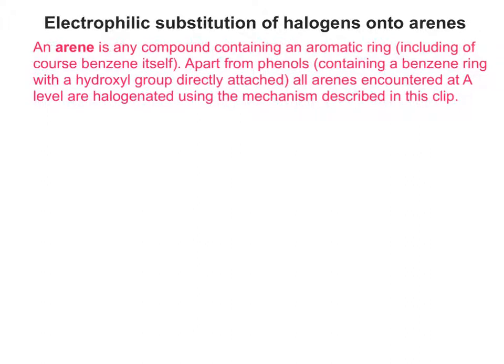Hello and welcome to this clip exploring and introducing the electrophilic substitution mechanism as applied to halogenation of arenes. Just to recap on aromatic introductions, an arene is any compound containing an aromatic ring, or benzene ring as it's sometimes referred to. This also includes benzene itself, and at A-level, apart from phenols — which contain a benzene ring with a hydroxyl group directly attached — all arenes encountered are halogenated using the mechanism we're talking about in this clip.